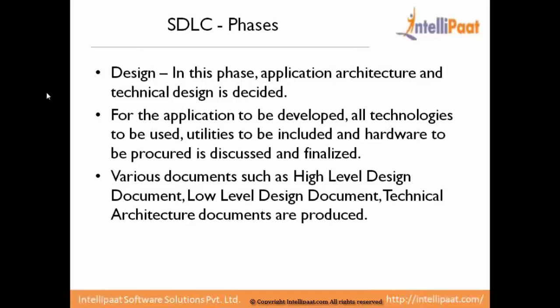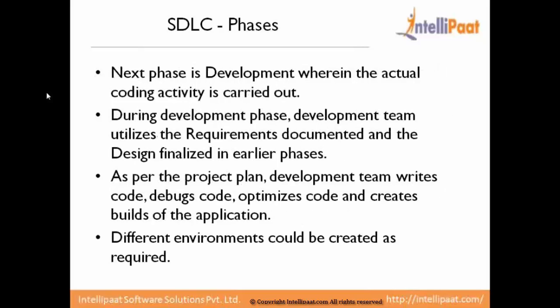The next phase, once design is completed, is the development phase. This is where the actual coding or execution of the design and requirements happens — merging the requirements and design together. The development team is writing different types of code for UI, functionality, and the server side, debugging and optimizing the code, and creating different builds of the application. Builds are packages of the application where UI, middleware, and database are all packaged together so the build can be deployed, tested, or utilized by end users.